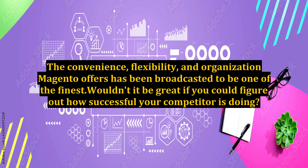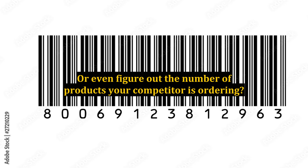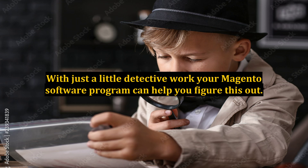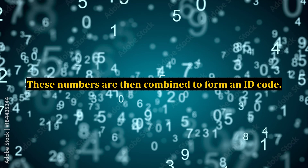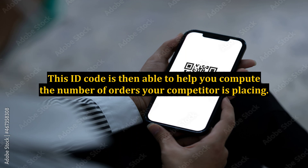Wouldn't it be great if you could figure out how successful your competitor is doing, or even figure out the number of products your competitor is ordering? With just a little detective work, your Magento software program can help you figure this out. Every time a company places a new order, Magento assigns a unique number and a store number. These numbers are then combined to form an ID code, which is then able to help you compute the number of orders your competitor is placing.